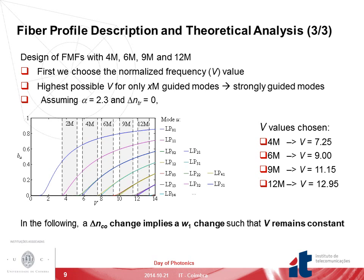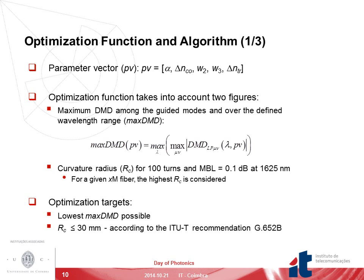When designing few-mode fibers, the first step is to choose the normalized frequency value. We choose the highest possible V for a given number of modes in order to get strongly guided modes. The V values chosen were 7.25 for 4 modes, 9 for 6 modes, 11.15 for 9 modes, and 12.95 for 12 modes. Note that a ΔNCO change implies a W1 change such that V remains constant. The optimization function considered takes into account the maximum DMD among the guided modes over the defined wavelength range, called max DMD, and the curvature radius for 100 turns with MBL of 0.5 dB at 1625 nanometers, with targets of lowest max DMD possible and curvature radius lower than 30 millimeters according to the respective ITU-T recommendation.